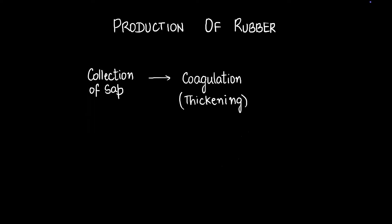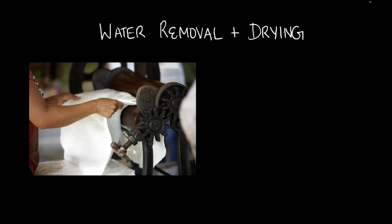After coagulation comes the step of drying. There is a lot of water content in the sap that we need to remove. We push the thickened slab between two rollers to squeeze out the water — much like how you would remove water from paneer.